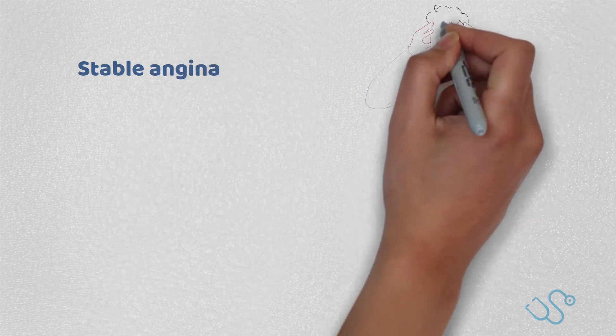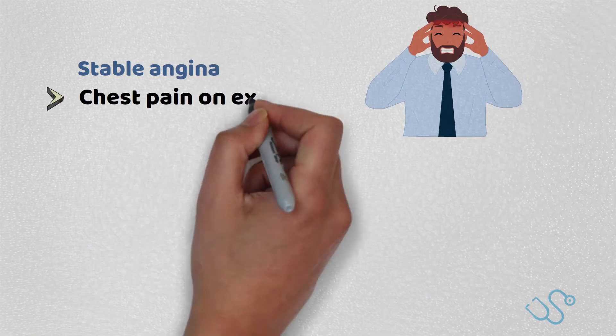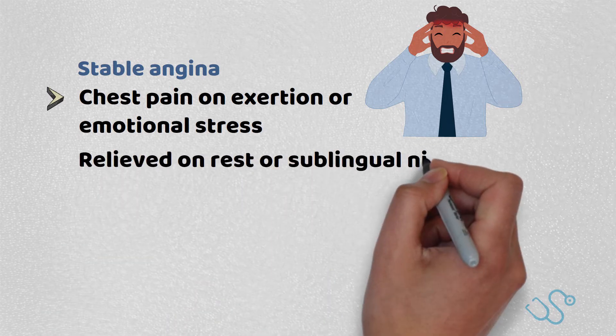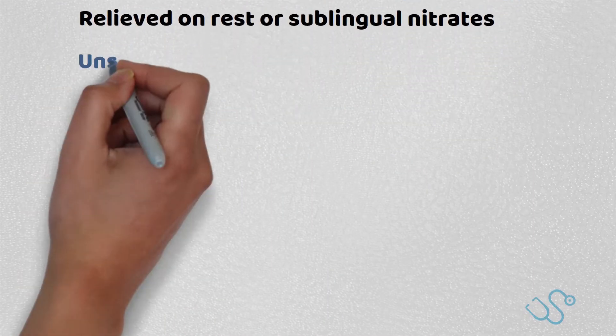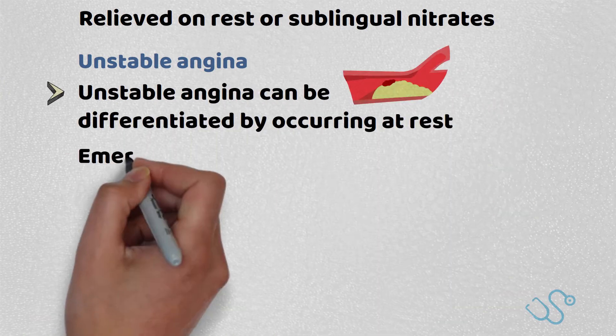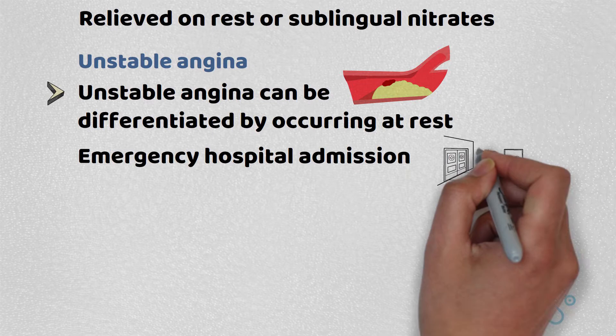Stable angina is a predictable pattern of disease, with chest pain on exertion or emotional stress that is relieved on rest or sublingual nitrates, whereas unstable angina can be differentiated by occurring at rest, the latter of which will require emergency hospital admission.